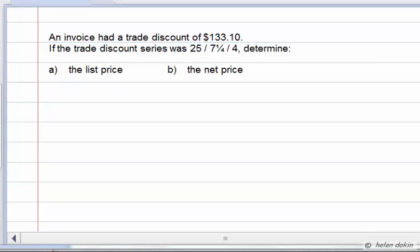In this example, we have an invoice that has a trade discount of $133.10. We also know that the trade discount series was 25%, 7.25%, and 4%. We are asked to determine what the original list price was and what the net price was. Let's see if we can figure this out.